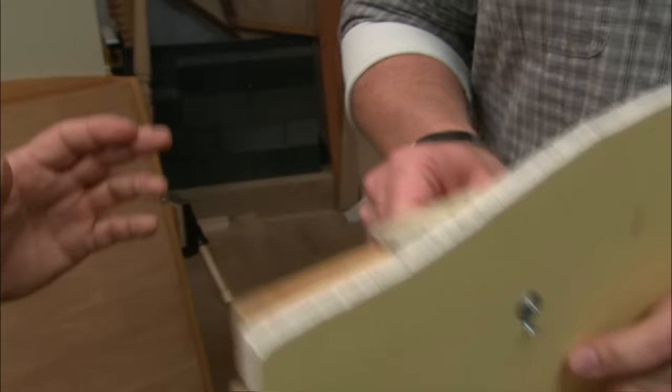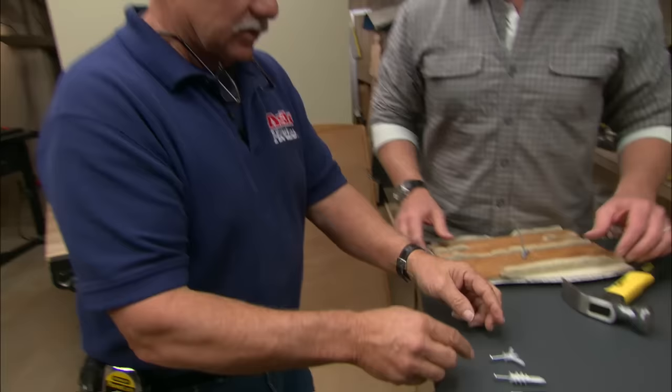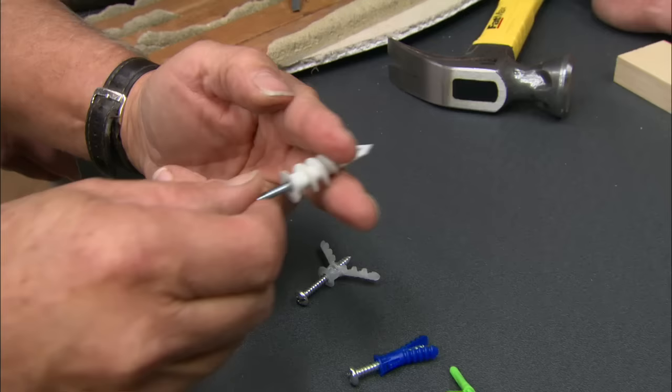Now we all don't have plaster and lath—a lot of us have drywall. And there are a lot of different fasteners for drywall: plastic mollies, toggles, and screws. For example, this is a large screw that screws into the drywall.